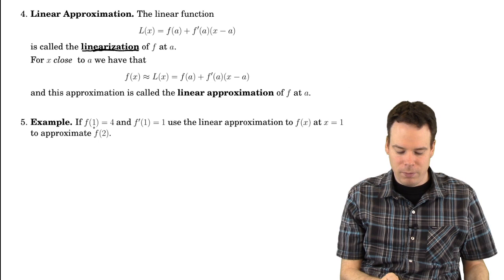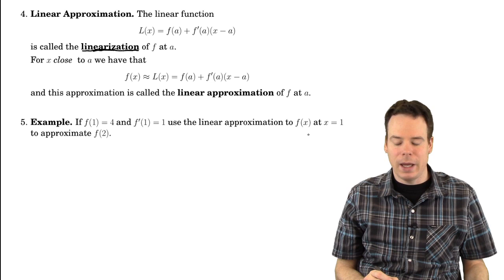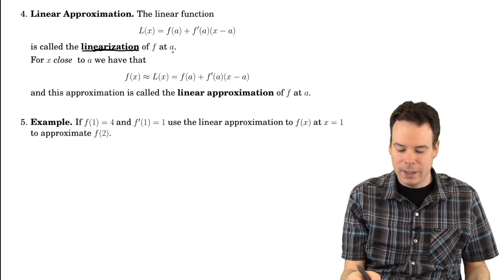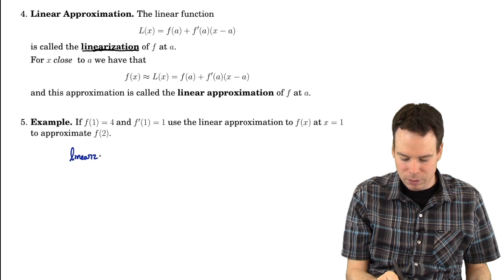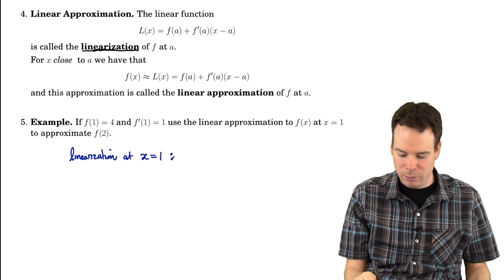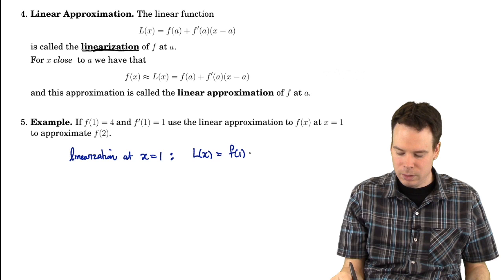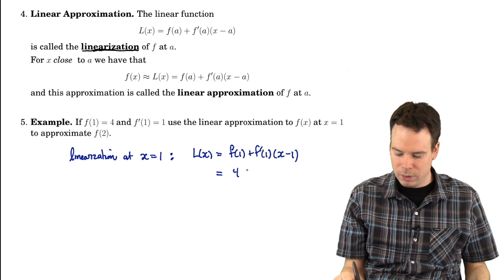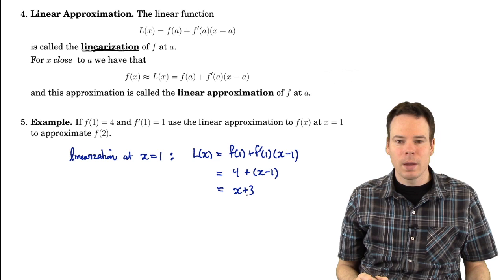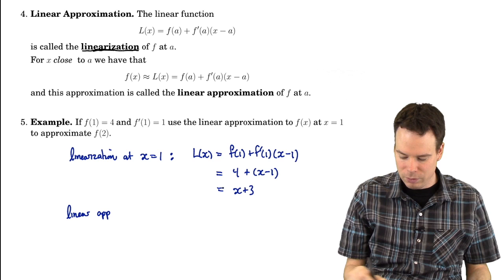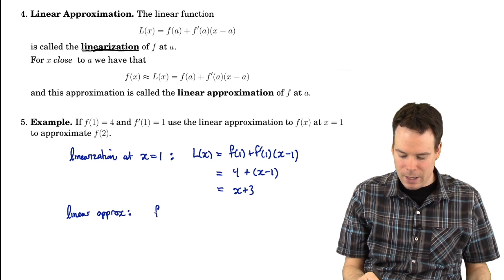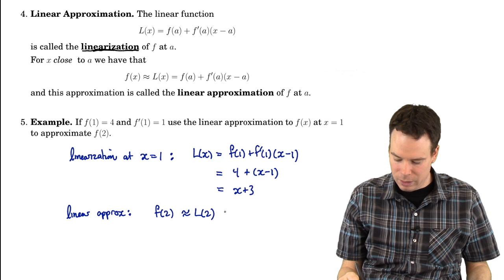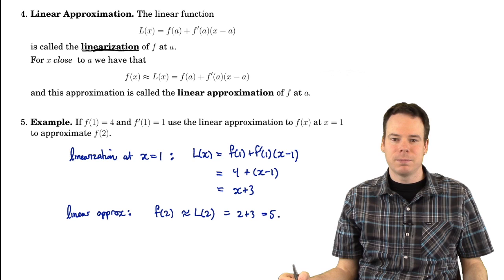Let's revisit the motivating problem. If f(1) = 4 and f'(1) = 1, we're going to use linear approximation at x=1 to approximate f(2). The linearization is L(x) = f(1) + f'(1)(x − 1) = 4 + (x − 1) = x + 3. Now we can do linear approximation: f(2) is approximately L(2) = 2 + 3 = 5. Use the tangent line to approximate the function for points near where you took the tangent line.